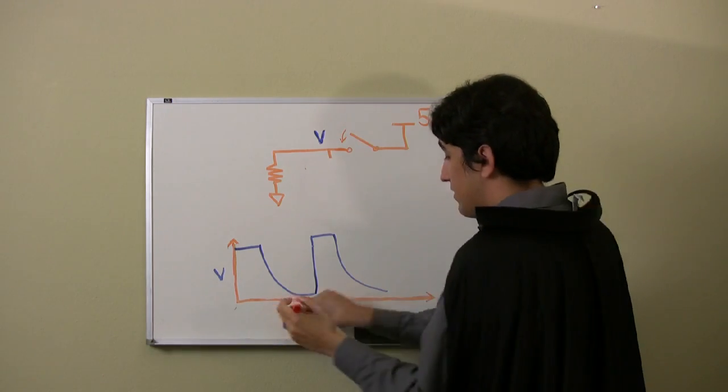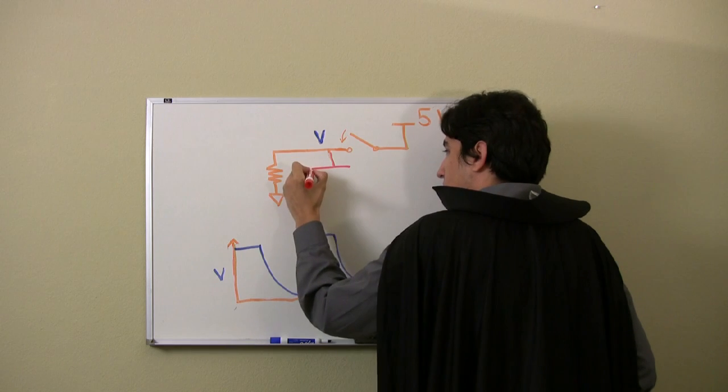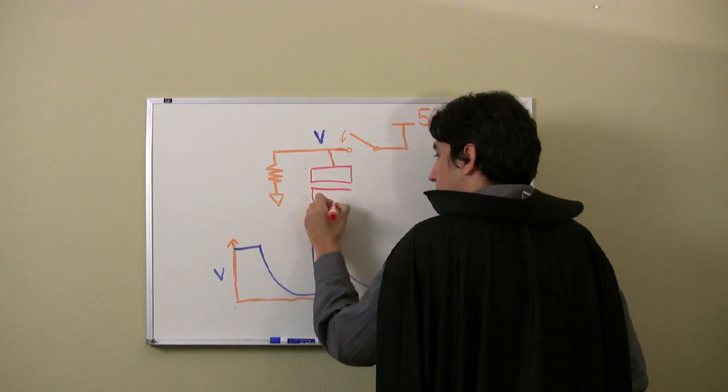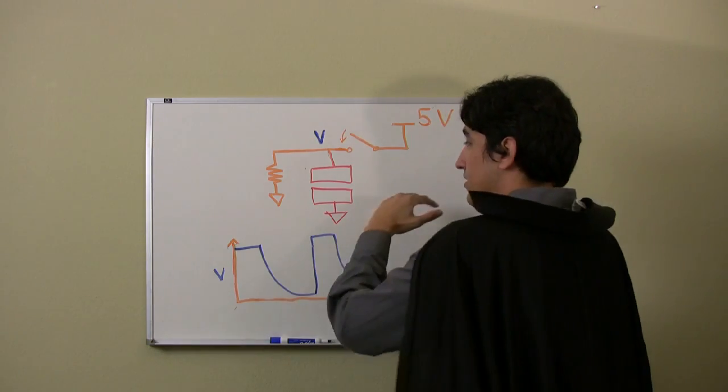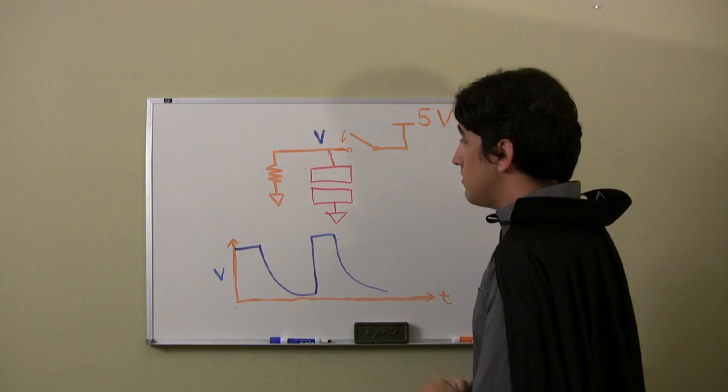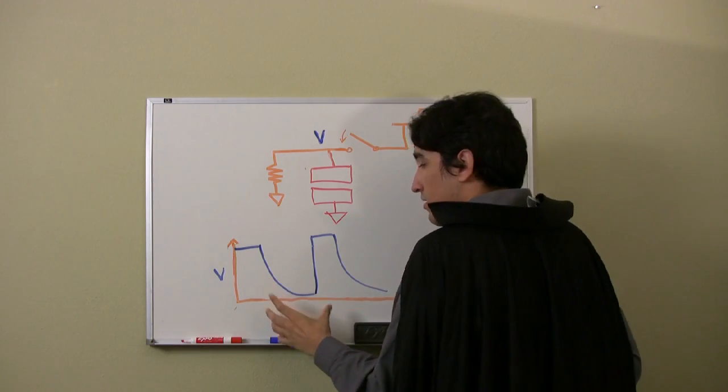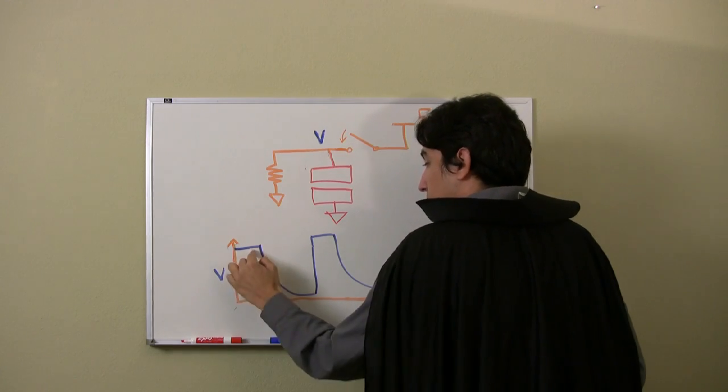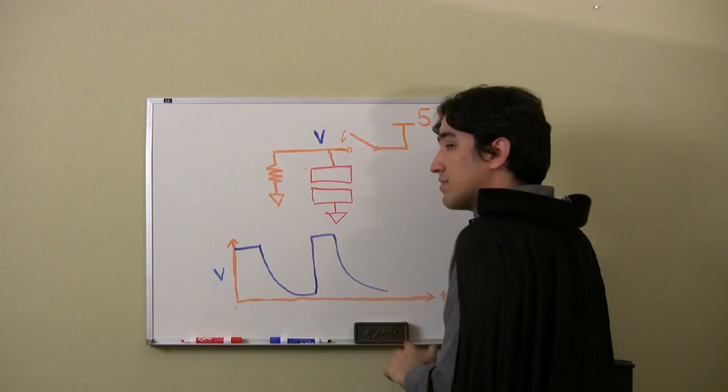But the capacitor is actually made up of two sheets of aluminum foil. When you move your hand between the sheets of aluminum foil, it changes the capacitance enough that you can tell by how long it takes for the voltage to drop, because it takes longer for the capacitance to discharge.